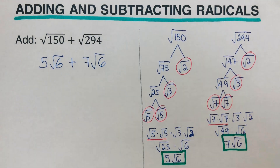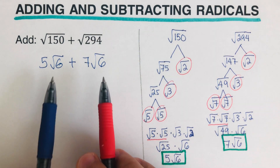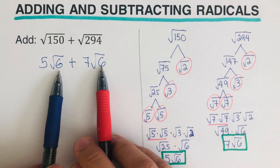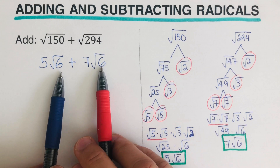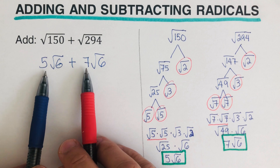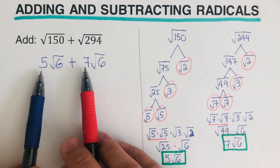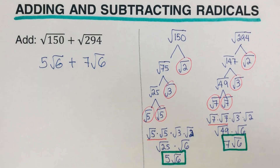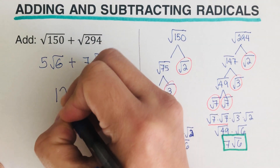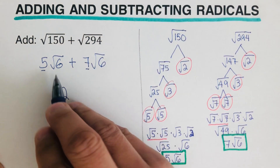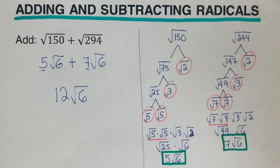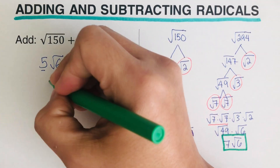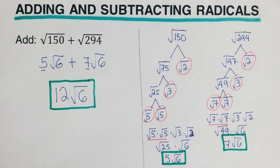Now as you can see, both of these two expressions have the same radicand. Again, the rule is radicals can only be added or subtracted when the radicands are the same. Both radicands are 6, so we can go ahead and add only the coefficients. We keep the radicand and add the coefficients: 5 plus 7 is 12. So the answer is 12 square root of 6.